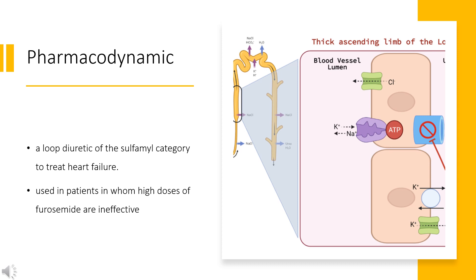Pharmacodynamics. Bumetanide is a loop diuretic of the sulfonamide category used to treat heart failure. It is often used in patients in whom high doses of furosemide are ineffective. There is, however, no reason not to use Bumetanide as a first-choice drug. The main difference between the two substances is in bioavailability. Bumetanide has more predictable pharmacokinetic properties as well as clinical effect.